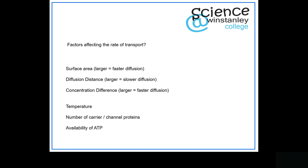The concentration difference: if there is a very similar concentration on both sides, the speed of diffusion is much slower. If there's a very big difference — very high on one side and very low on the other — diffusion can occur much faster. However, active transport could occur slower because there's a bigger force trying to move molecules from where there's very little to where there's a lot.